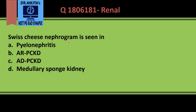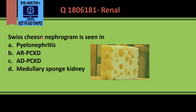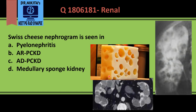Swiss cheese nephrogram is seen in — first we should know what Swiss cheese is: it's a type of cheese which has multiple holes within it. A condition in the kidney which produces an appearance like Swiss cheese, due to holes, is autosomal dominant polycystic kidney disease, which has large cysts in both kidneys.